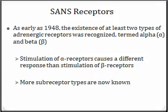Within the SANS there are many receptors, and many have not even been discovered yet. The book mentions alpha, beta 1, and beta 2, but more current literature supports alpha 1, alpha 2, alpha 3, beta 1, beta 2, and beta 3 — so there are lots of different receptors located within the SANS.